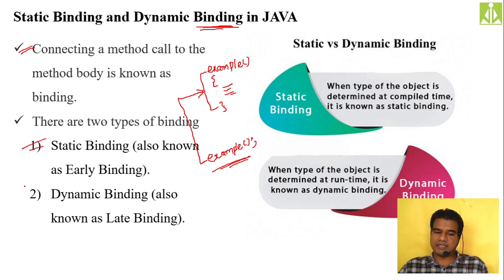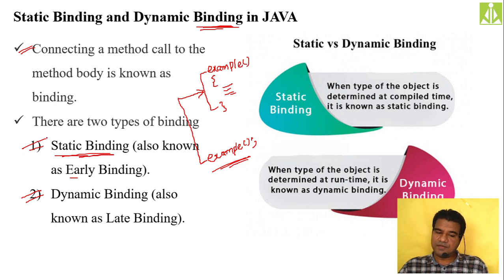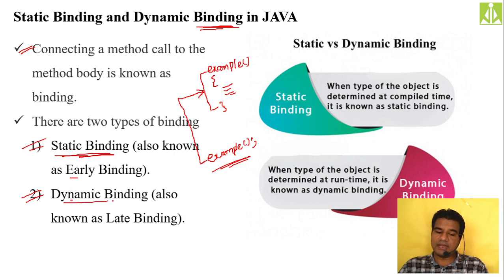There are two types of bindings: static binding and dynamic binding. If the binding process happens at compile time, it is early binding or static binding. If the binding happens at runtime, we call it dynamic binding or late binding. Static binding is early binding; dynamic binding is late binding. If the object type is determined at compile time, it is static binding; if determined at runtime, it is dynamic binding.